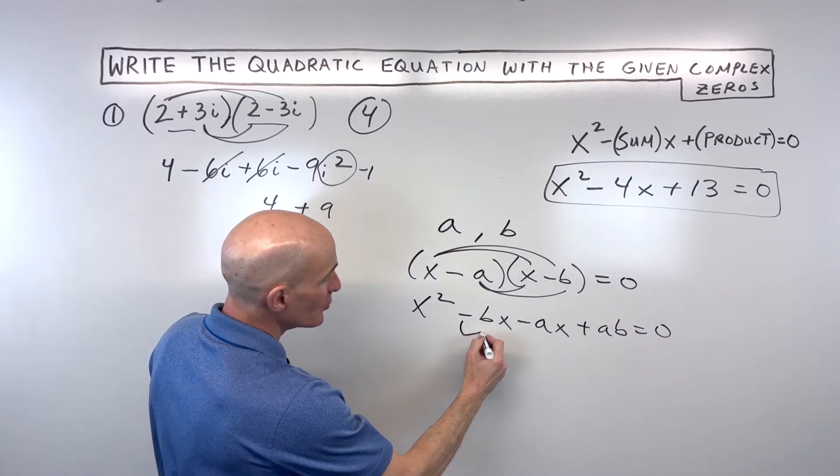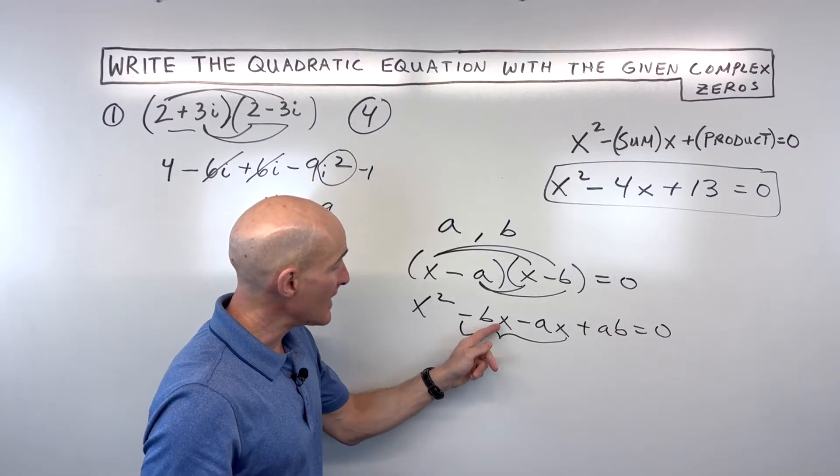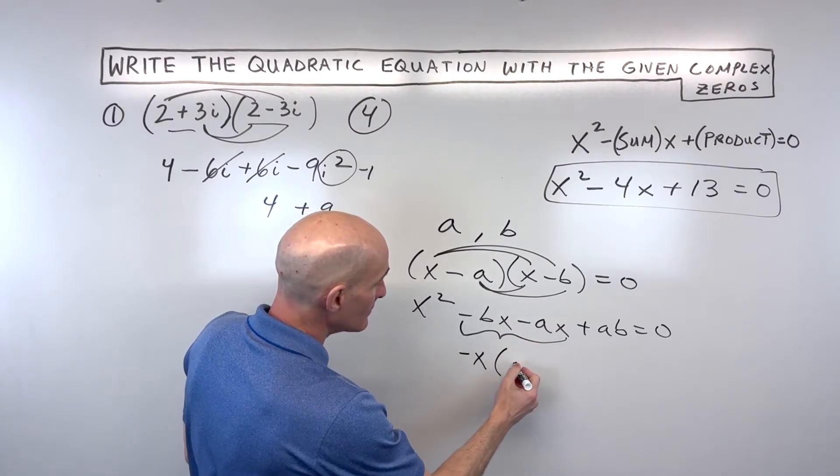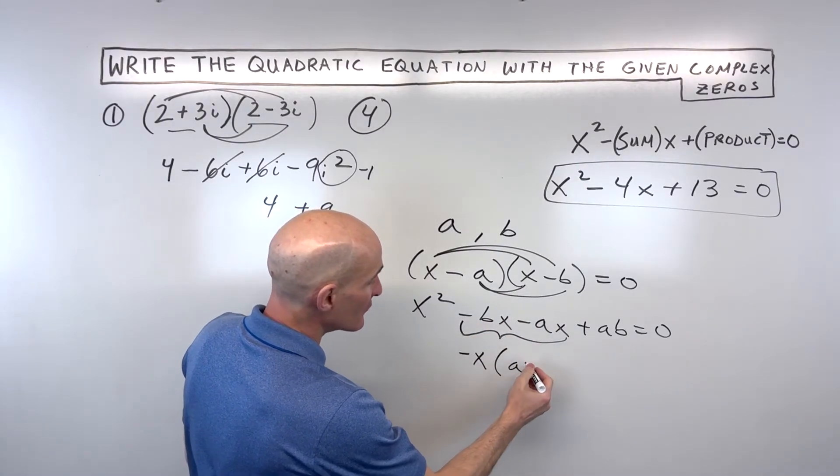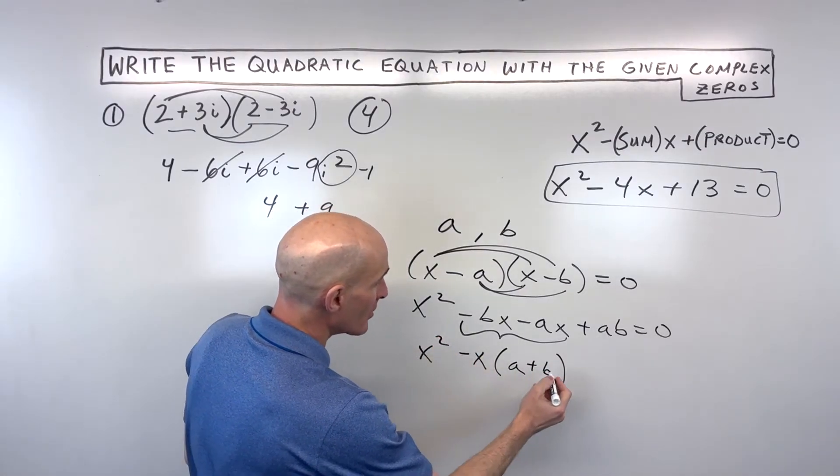And then notice that these two middle terms right here have an x in them. So what we're going to do is we're going to factor out a negative x. So if we factor out that negative x, we're going to get a positive a and we're going to get a positive b. I'm going to bring down the x squared and the ab.